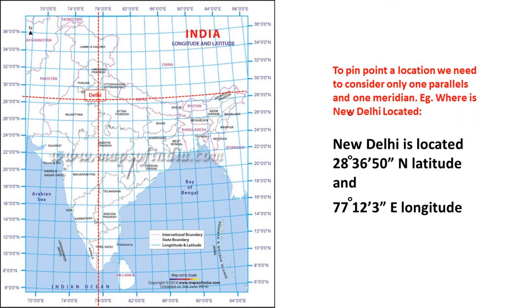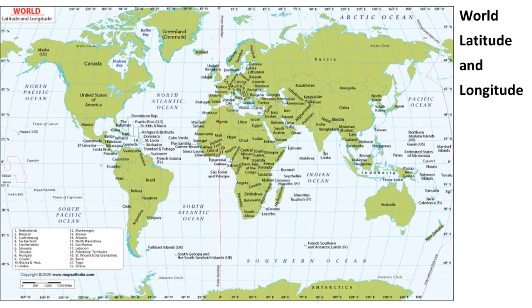On the world map, you can see the prime meridian — the longitude that passes through Greenwich — and there is the equator, and the international date line towards the sides of the globe.